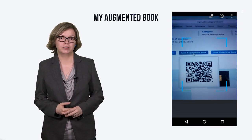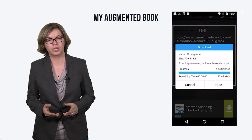Now let's look at the book we have augmented. We first flashed the book from mymultimediaworld.com. The file is downloaded on the phone and we can load it in the ARAF browser.